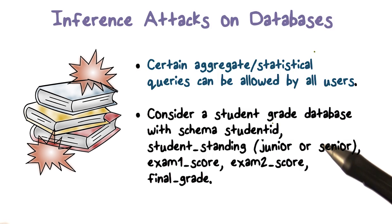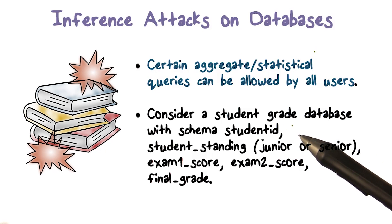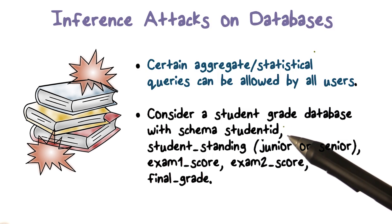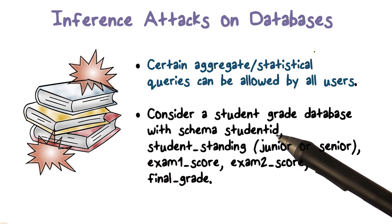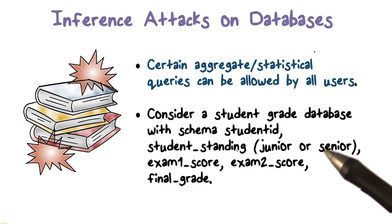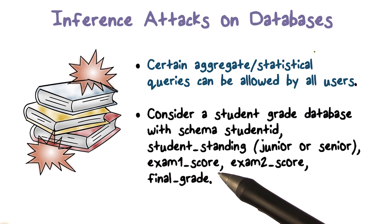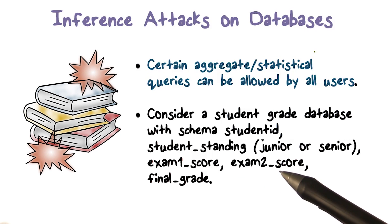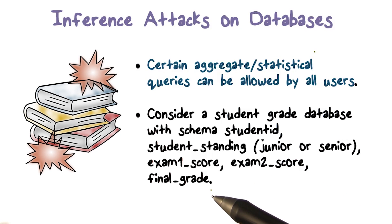A concrete example here, since we're talking to students in a course, is a database that contains all your grades. The schema might have an attribute that is the student's ID, the student's standing — whether you're a junior or senior — and then scores, which might be numerical values between 0 and 100, on exam 1, on exam 2, and then the final grade.